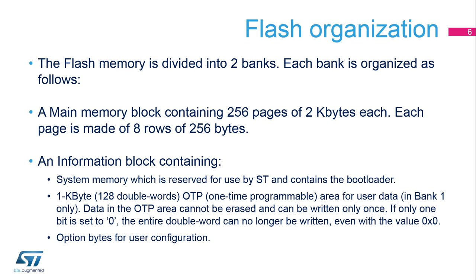The flash memory is divided into two banks, each having a main memory block containing 256 pages of 2 kilobytes each. Each page is made of 8 rows of 256 bytes. Each main memory block has an information block, which contains three parts. The first part is the system memory, which is reserved for use by STMicroelectronics and contains the bootloader.